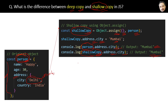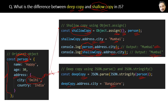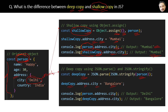Now if we use the deep copy method — here we are copying the object into the deep copy object and then assigning Bangalore as the city. If you log the parent person object's address city, you get Delhi, not Bangalore. It is not changed. But if you look at the city of the deep copy object, it is set to the modified city, Bangalore.